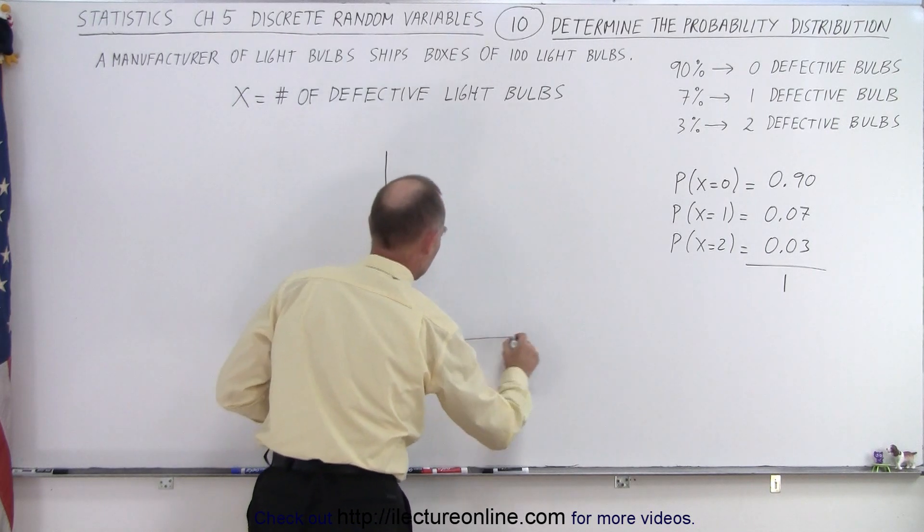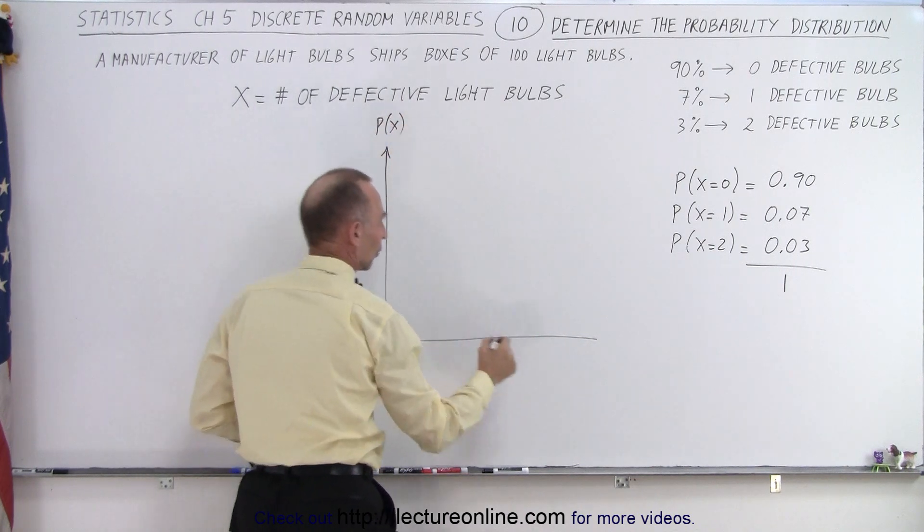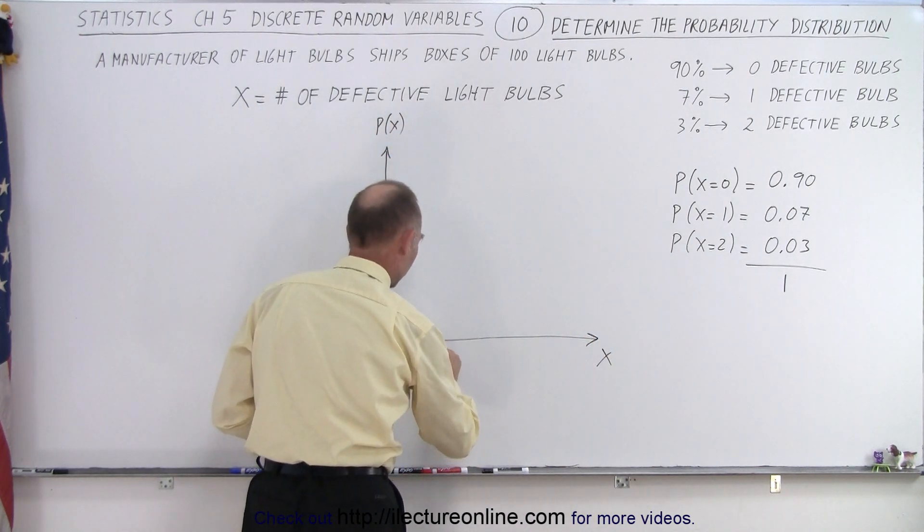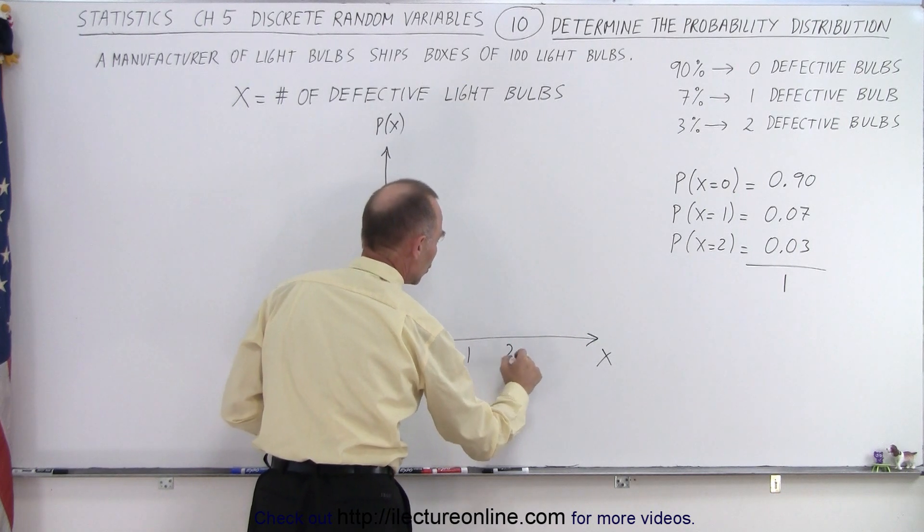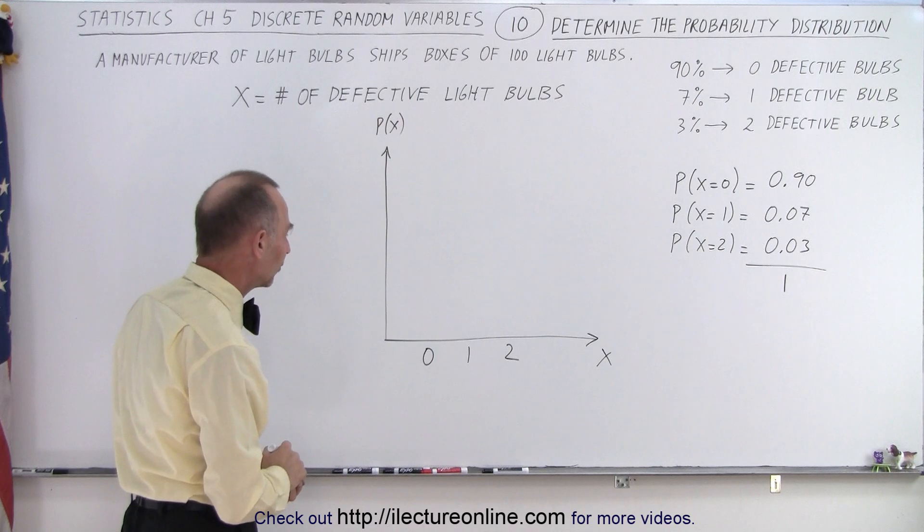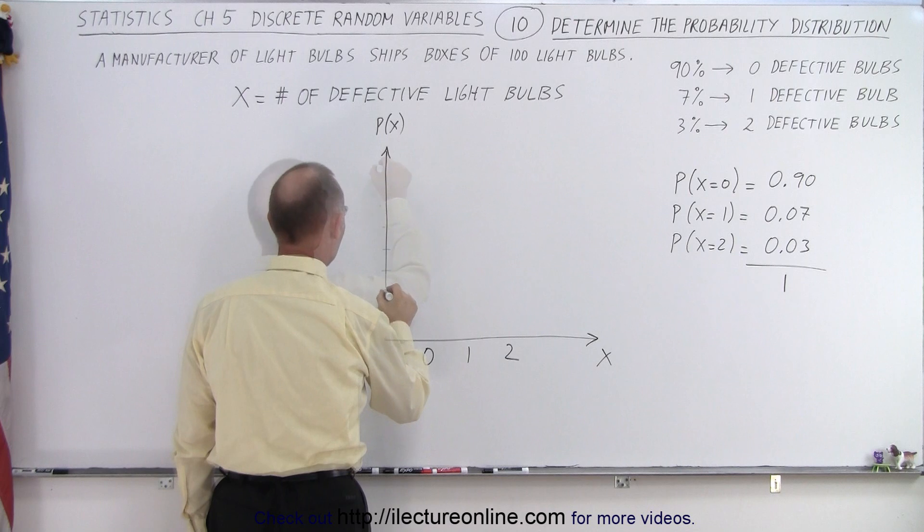So here we go. On the vertical axis, we have the probability of X. On the horizontal axis, we have X. There's only three values. We can have 0, 1, and 2. And again, those numbers represent the number of defective light bulbs. Here we can have anywhere from, let's see here, that would be 0.1, 0.2, 0.3...